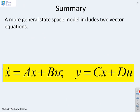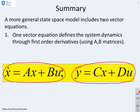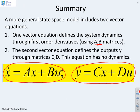So a summary. A more general state-space model includes two vector equations. The dynamics are in this part, x dot equals Ax plus Bu. And the output is defined in this part, y equals Cx plus Du. So one vector equation defines the dynamics and has matrices A and B. And a second vector equation defines the output y through matrices C and D. But the key thing is the second equation has no dynamics. So all the dynamics are in the x dot equals Ax plus Bu.